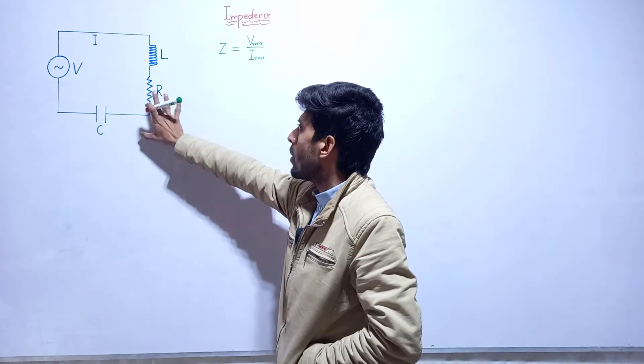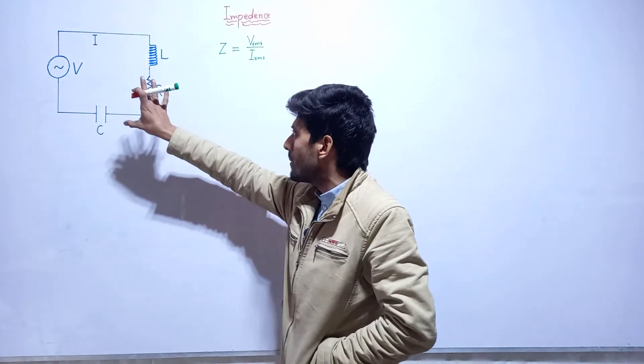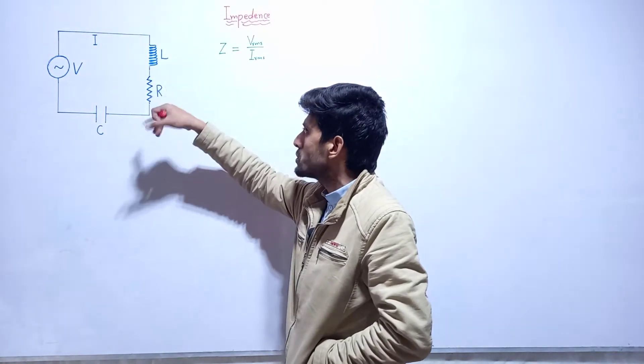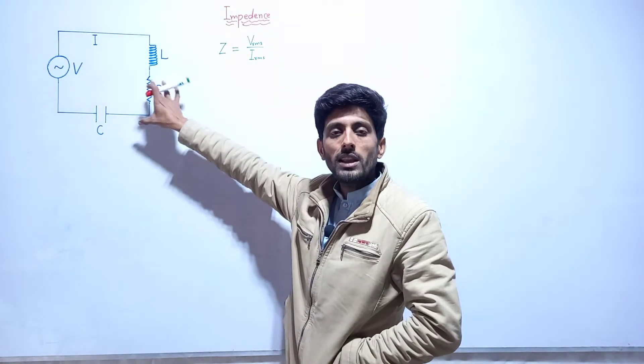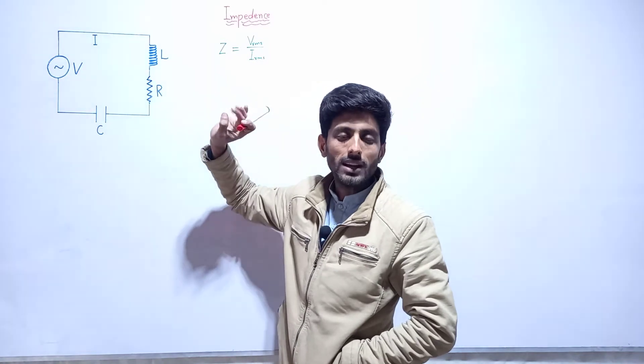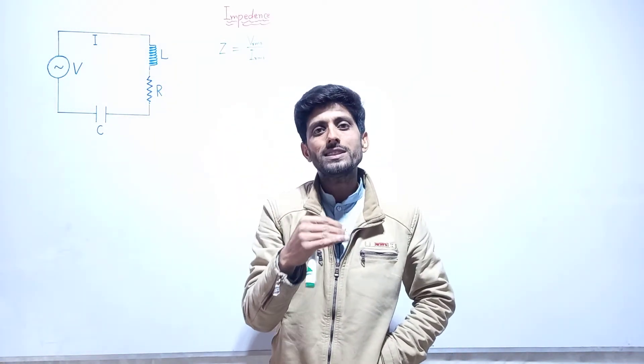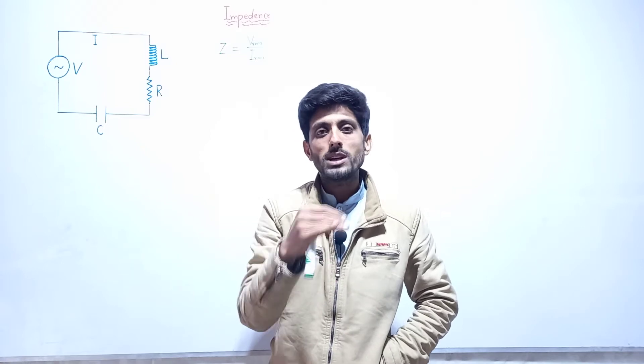How much total opposition is offered by all these three components? The opposition offered by these three components is said to be the impedance of this circuit. The combined effect of resistance and reactances is said to be impedance.